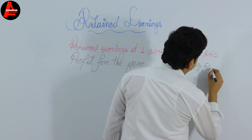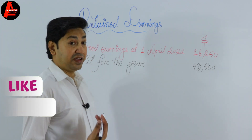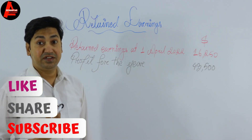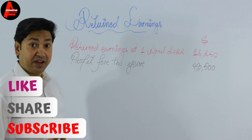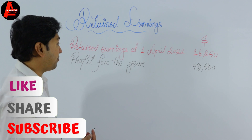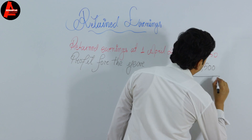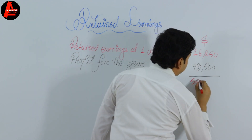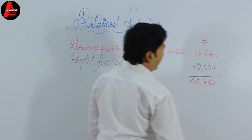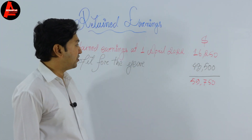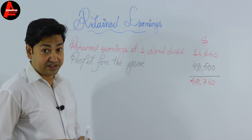The profit for the year is $43,500. Then we have dividend paid, which is an expense, so before we subtract it, we will first sum up the opening balance and the profit. Adding these two amounts gives us $59,750.